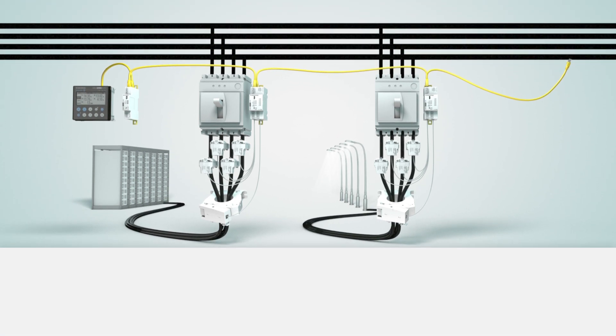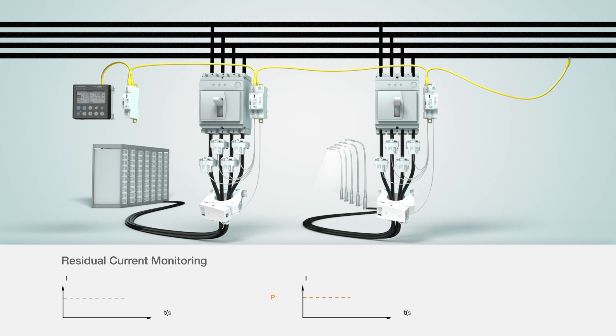DIRIS DigiWare RCM monitors residual currents across your electrical distribution and detects increasing residual currents early on, before they disrupt your installation. An alarm is activated as soon as a user preset threshold is exceeded.